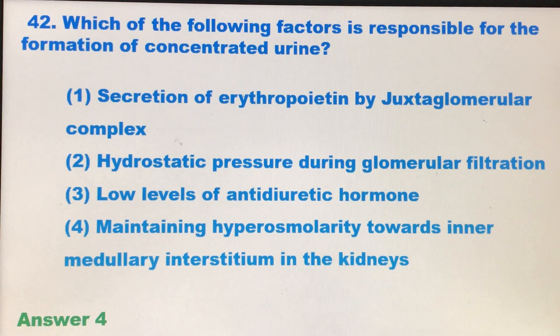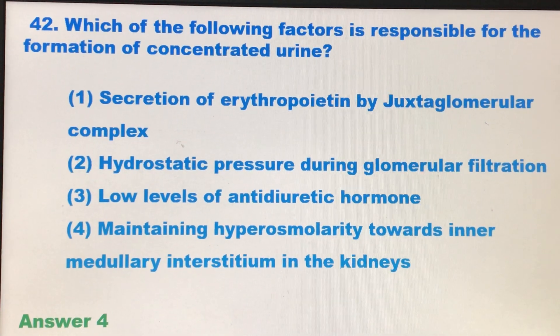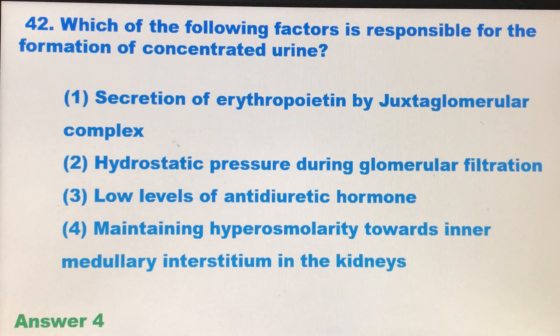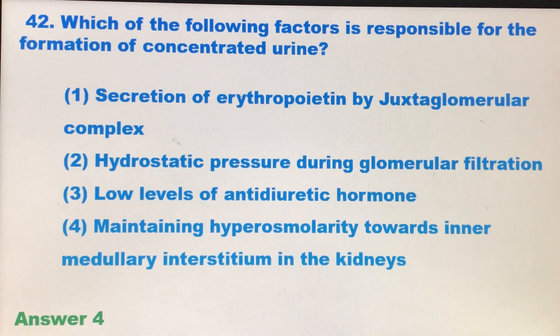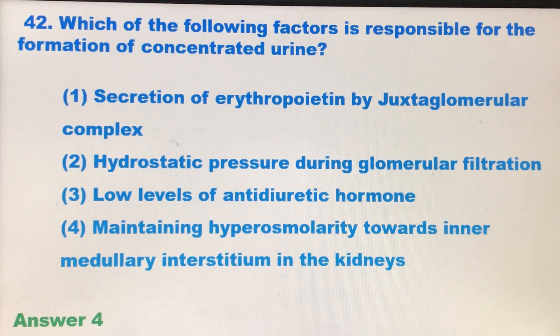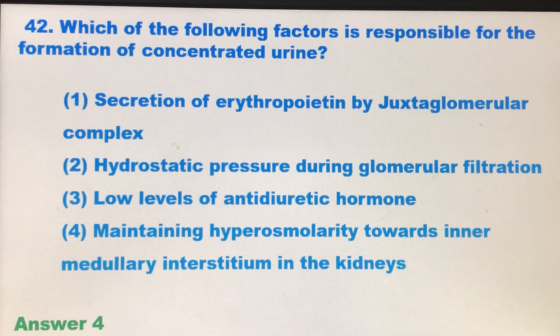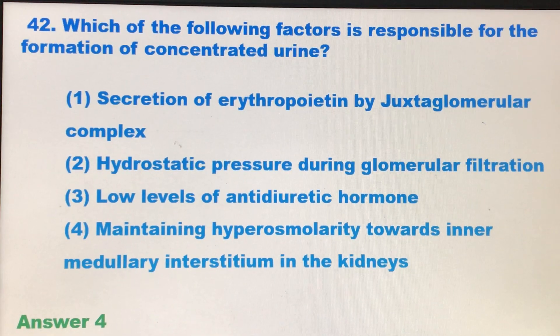The first option is secretion of erythropoietin by the juxtaglomerular complex. No, that is not the answer — erythropoietin is in no way related to the formation of concentrated urine.